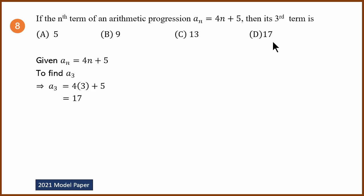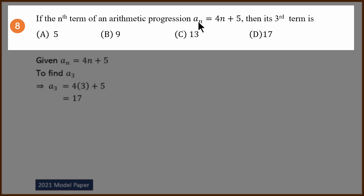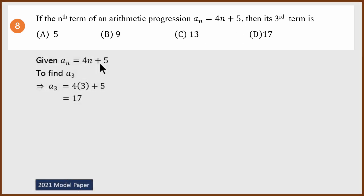Question number 8. Again very simple. In this case, An equals 4n plus 5. Find the 3rd term. A3 is 4 times 3 plus 5, which is 12 plus 5, equals 17. The answer is D.